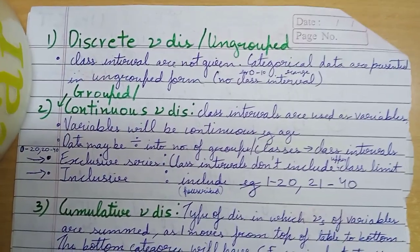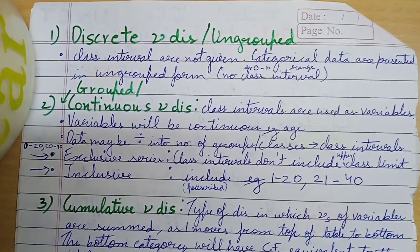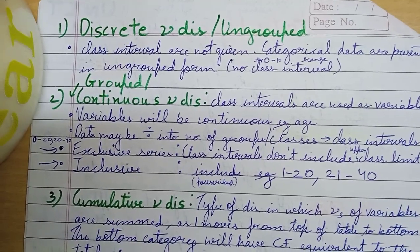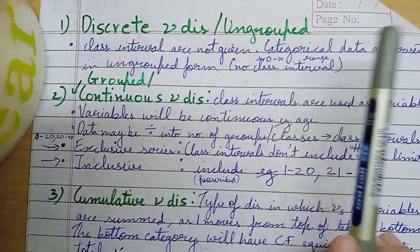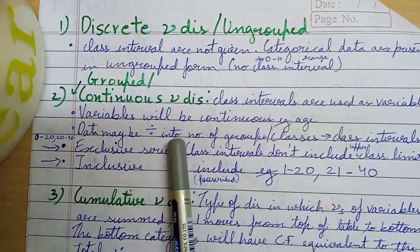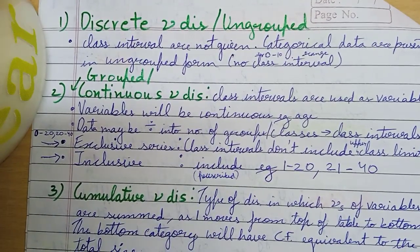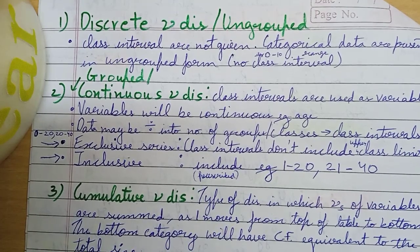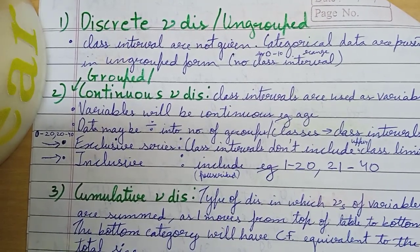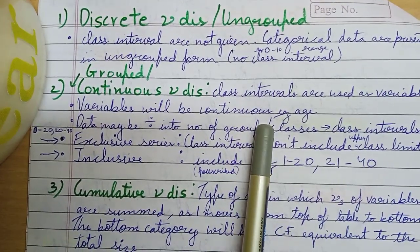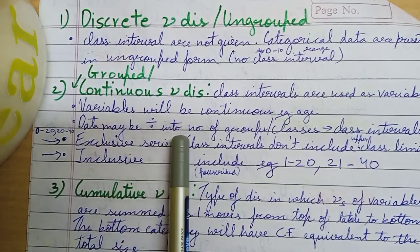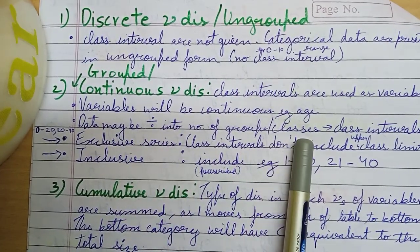Discrete frequency distribution or ungrouped frequency distribution. Then next, continuous or grouped frequency distribution - we can use the class intervals, we can use variables, and this should be continuous. The data we can divide into a number of groups or classes.